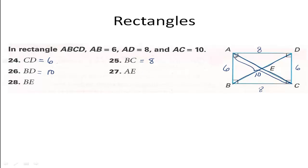AE is half of diagonal AC. If the whole diagonal measures 10, then AE is 5. BE is half of diagonal BD — since both diagonals measure 10, half of BD is also 5. So AE equals 5 and BE equals 5.